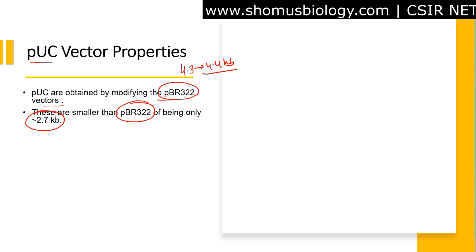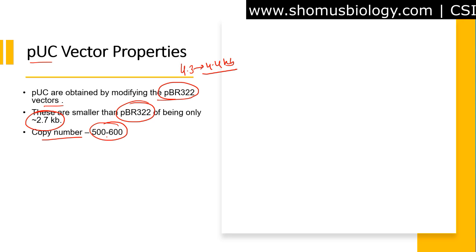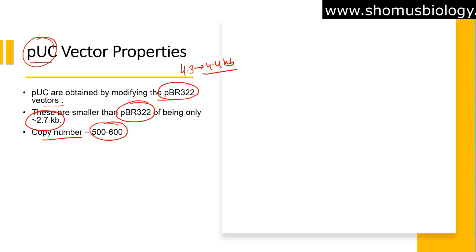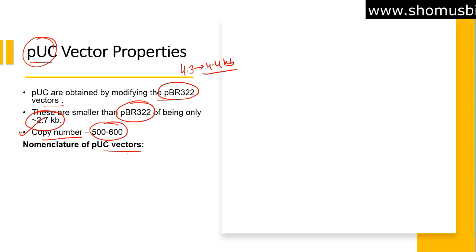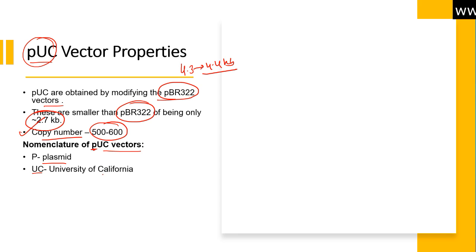The copy number for the pUC vector is 500 to 600 normally, naturally. So the key advantage the pUC vector has over pBR322 is its high copy number. As for nomenclature: 'p' stands for plasmid, and 'UC' stands for University of California.